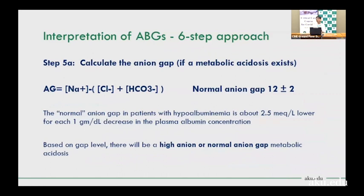Step five: when metabolic acidosis is present — decreased pH, decreased bicarbonate, decreased PCO2 — calculate the anion gap. Anion gap = Sodium − (Chloride + Bicarbonate). Normal anion gap is 12±2, typically 12–15. This step is important because metabolic acidosis can occur with a normal anion gap, where unmeasured anions are not the primary cause.